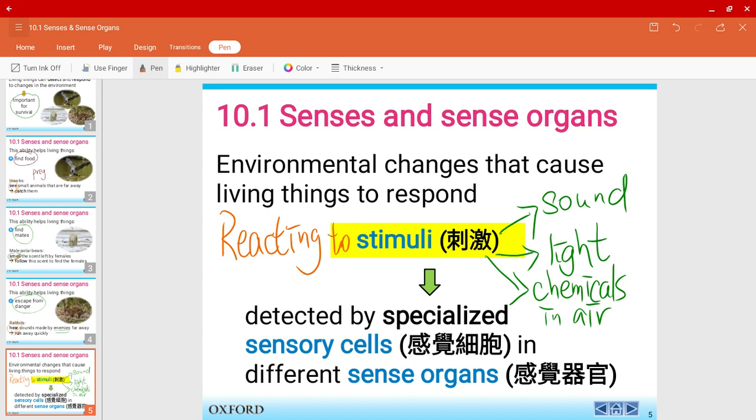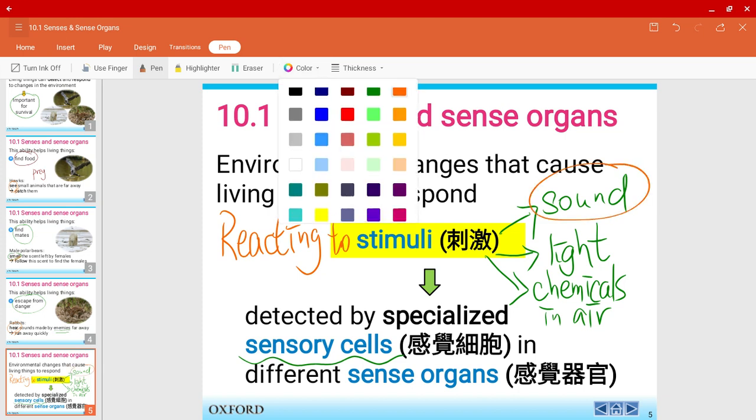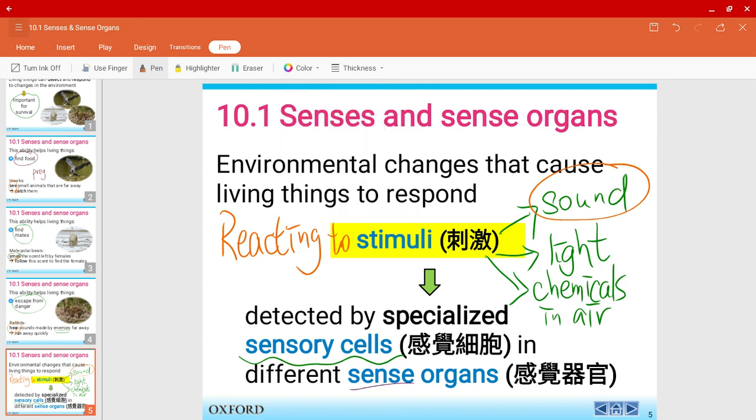These are detected by specialized sensory cells in different sense organs. Say, for example, for sound. For sound, what sense organs do we use to hear? Of course we use our ear to hear. Well, that rhymes. Ear to hear. And the specialized sensory cells would be the specialized ear cells, the specialized cells that are in the ear.